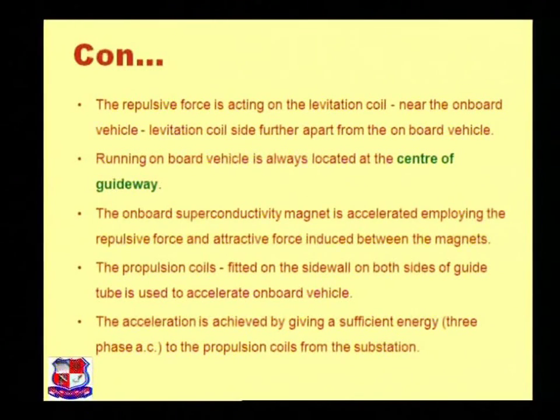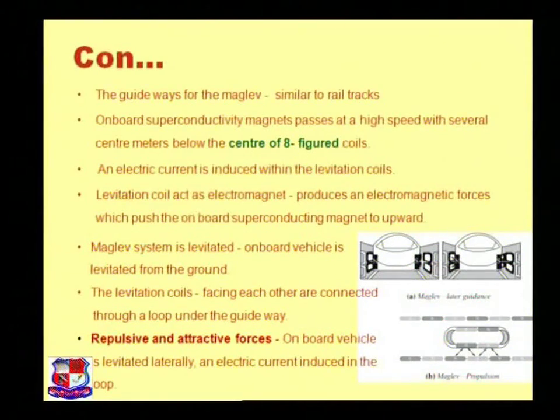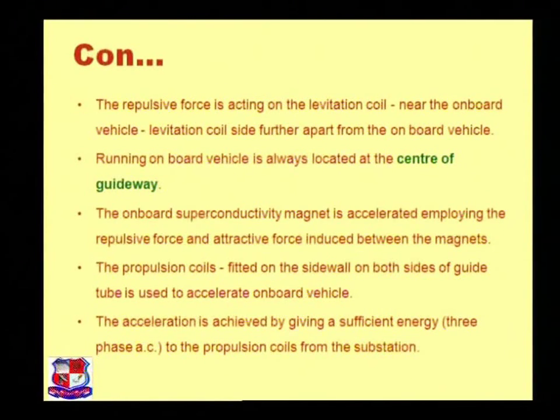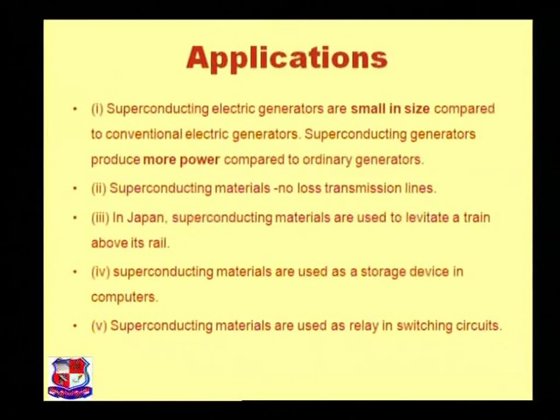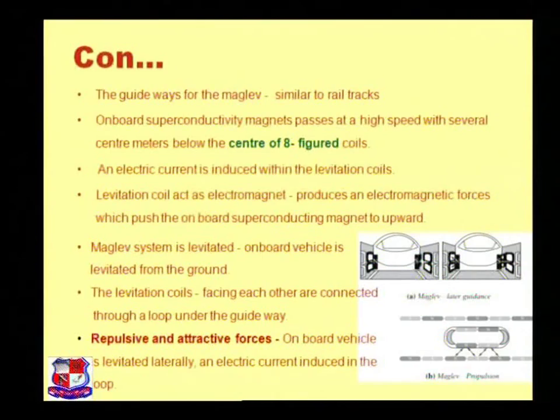The onboard superconductivity magnet is accelerated employing the repulsive force and attractive force induced between the magnets. Like in this figure, North Pole and South Pole both are the poles and always located in the center points. That is why the train is levitated from the rail track.